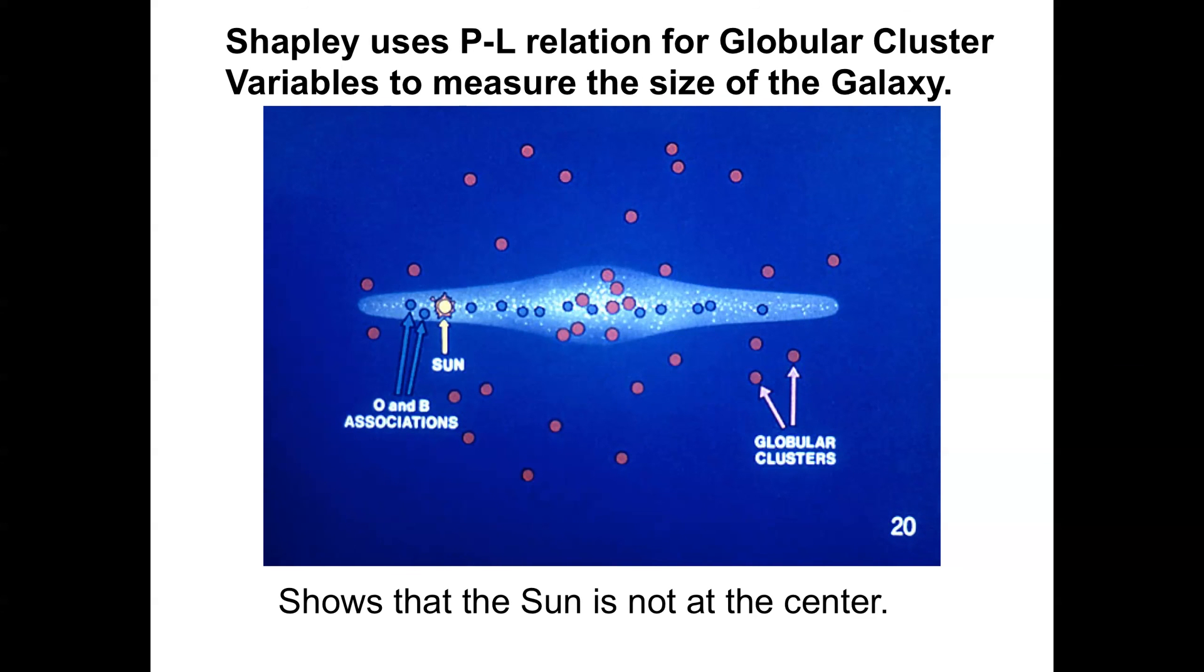With this as a distance indicator, Shapley could measure the distribution of globular clusters. Globulars all have variable stars in them, and by using the variables within the globulars, he could find the distribution of globulars on the sky. And what he found was that that distribution was more or less spherical, but that the sphere was not centered on the sun but was centered on a distant point in Sagittarius, quite far from our own sun, and just displacing then the sun from the center of the Milky Way galaxy.